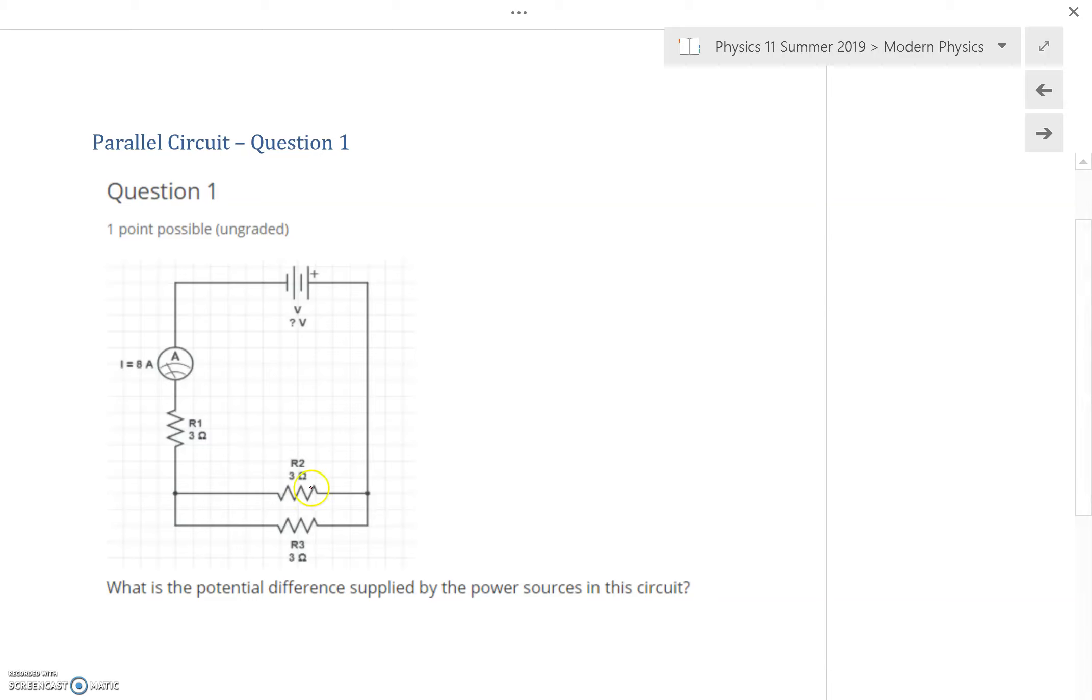In this circuit we have two resistors located in parallel along with a resistor in series. We notice that we do not have the voltage of the battery, but we do have the resistances of the three resistors, all three ohms, and also the current through this ammeter of 8 amps. Therefore we know that the current through the whole system would be 8 amps.